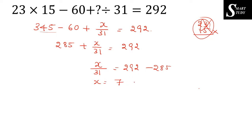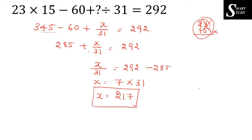Transferring the denominator to the other side: x equals 7 into 31. So 7 into 30 is 210, and 7 into 1 is 7, giving 210 plus 7 equals 217 as the final answer. Once you get 345, you can subtract 60 to get 285, then 292 minus 285 is 7, and you only need to multiply 7 by 31 to get the answer directly.